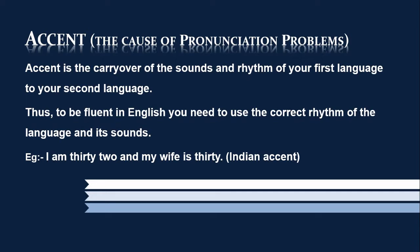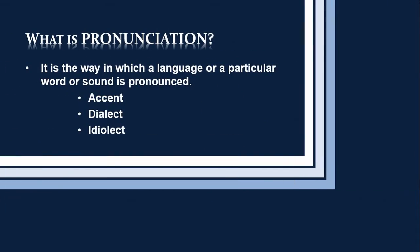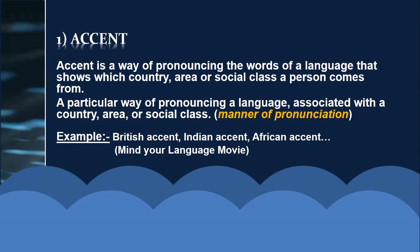This is one of the important things you need to notice if you want to improve your pronunciation. The accent of our first language is something we need to get rid of. So let's define pronunciation. Pronunciation is the way in which a language, a particular word, or a sound is pronounced in a given language. It encompasses accent, dialect, and idiolect. Accent is a way of pronouncing the words of a language that shows which country, area, or social class a person comes from.